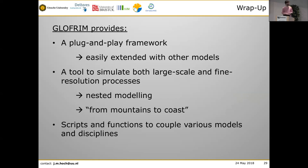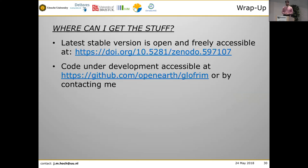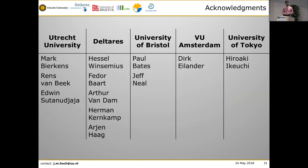To wrap it up: GLOFRIM provides a plug-and-play framework that can easily be extended with other models — it's flexible, it's open. You can perform nested modeling simulations, and it provides simulation from the mountains to the coast: a snow module in the hydrologic model, 1D routing over the larger domain, and really detailed inundation at the river mouth. A first version is available at Zenodo, though it's already somewhat outdated — for the most updated version, go to GitHub. I also want to thank my collaborators from different research institutes. Model coupling is really nice to bring together not just models, but also different disciplines and research groups.